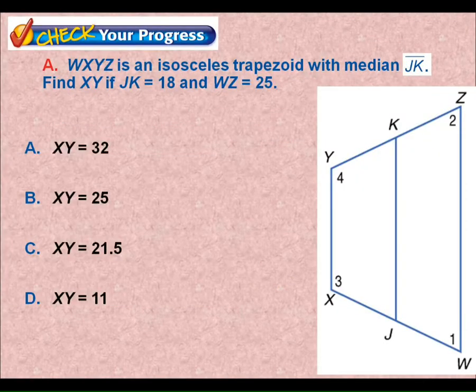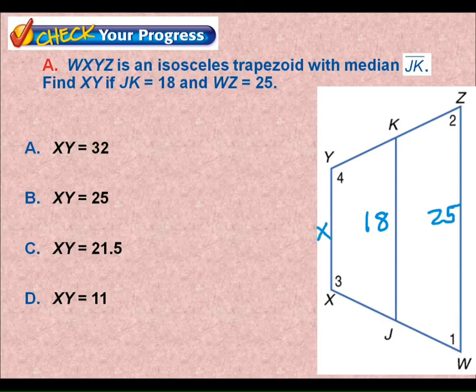If you have JK is 18, so here's another one like that. JK is 18, WZ is 25. I want to know what is XY. Isosceles trapezoid. So I can apply that theorem. This says if you add the two bases together, which again, those are the two bases, and divide that number by 2, it should give you 18.